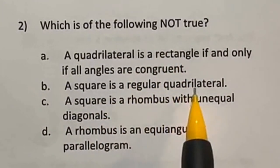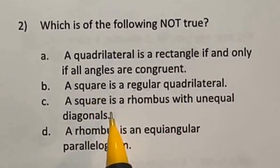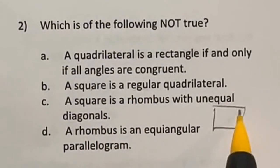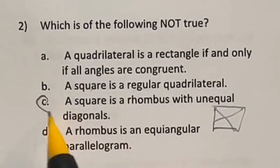A square is a regular quadrilateral. That's true as well because regular means that all the sides and angles are the same and a square is. A square is a rhombus with unequal diagonals. That's actually false because in a square, those diagonals are the same. So that definitely is an answer here.